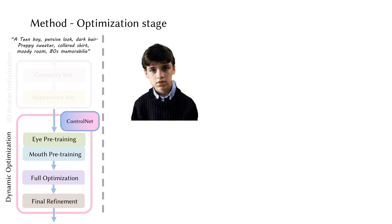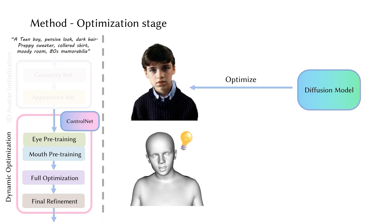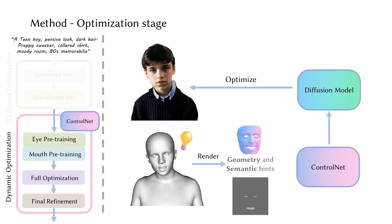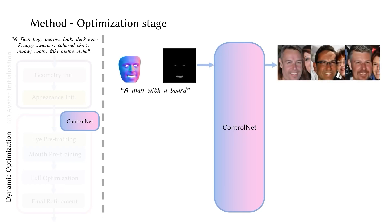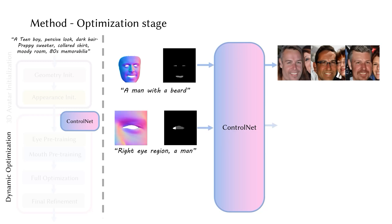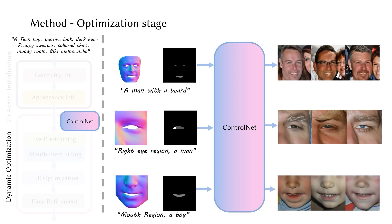In order to improve the overall quality, we propose to use a pre-trained diffusion model to optimize the initial avatar. To incorporate the information of the underlying mesh, we train a ControlNet to provide geometry and semantics-aware guidance using renderings of the SMPLX model as conditions. The ControlNet takes normal maps and segmentation maps as conditional inputs to generate aligned images, and is trained using region-specific data for the face, mouth, and eye regions.